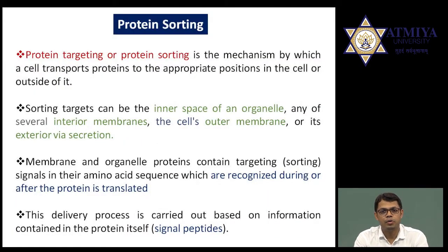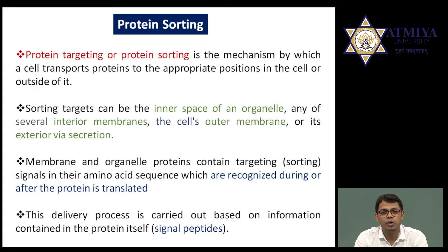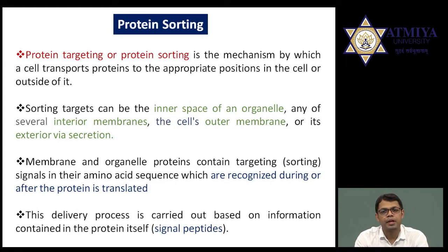Protein synthesis occurs in the cytoplasm — either on free ribosomes or on bound ribosomes, which are ribosomes associated with the endoplasmic reticulum, commonly called rough endoplasmic reticulum. Whether protein is synthesized in the free cytoplasm or in the rough endoplasmic reticulum, these proteins have a certain destination, as proteins are required by all cell organelles, the cell membrane, and sometimes need to be secreted out.